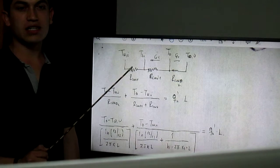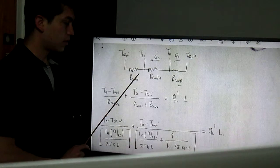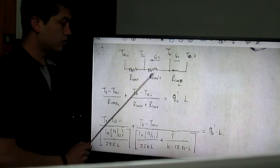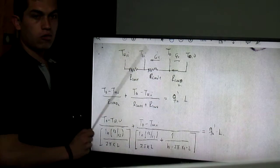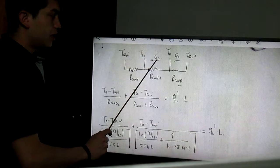For part A we are asked to find the thermal circuit which is composed of two resistances, two conductive resistances and one convective resistance.